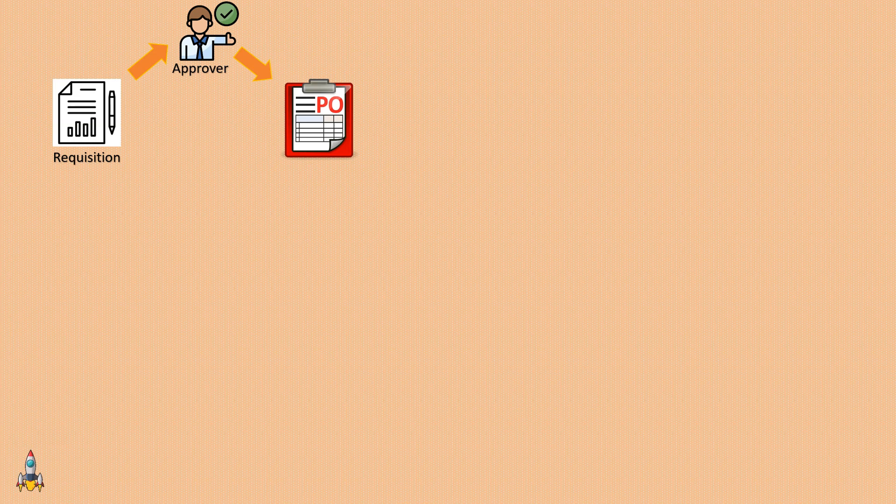Once you create the purchase order it resides only within your organization, so you need to send it to the correct supplier. To do that, there is a process called PO dispatch, through which the PO is dispatched to the supplier. There are various methods to dispatch a PO, such as phone, email, print copy, or fax. Based upon the dispatch method selected, the PO is dispatched to the supplier.